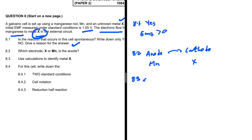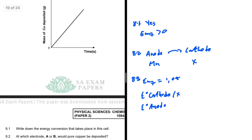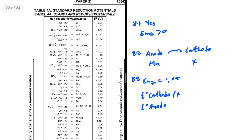For question 8.3, we need to use calculations to identify metal X. We are given the initial EMF of 1.05 volts. Using the table of standard reduction potentials, we can find the potential at the cathode where metal X is located, and at the anode where Mn is located.